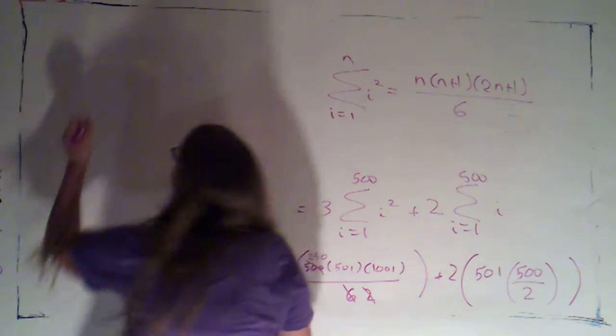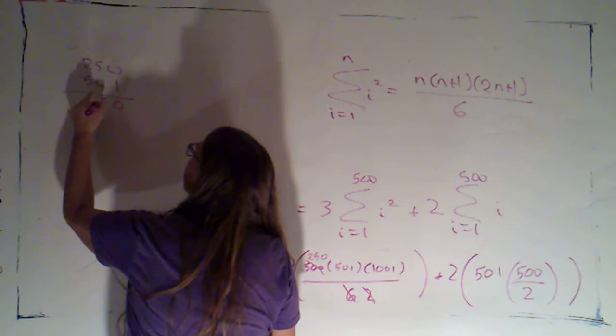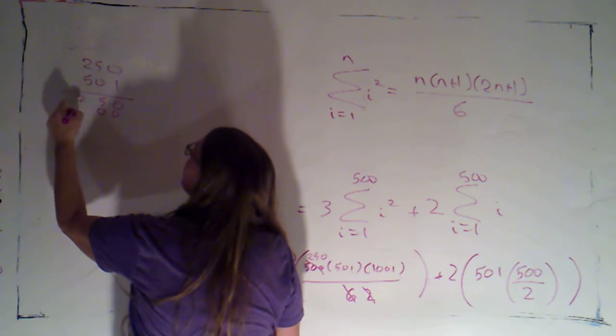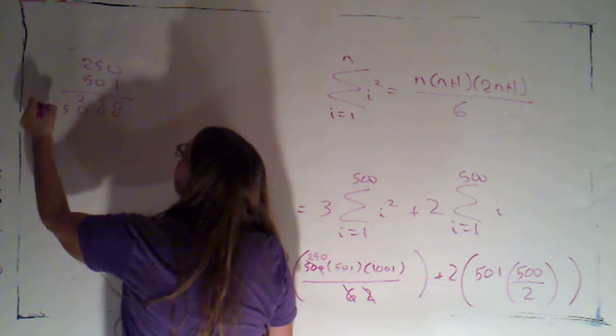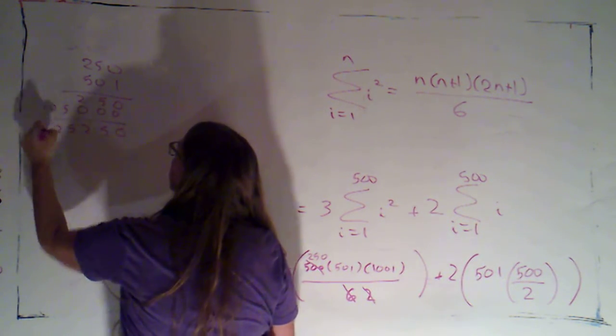So let's see, two hundred and fifty times five hundred and one. Zero five two zero zero zero. Zero twenty five twelve zero five two five two one.